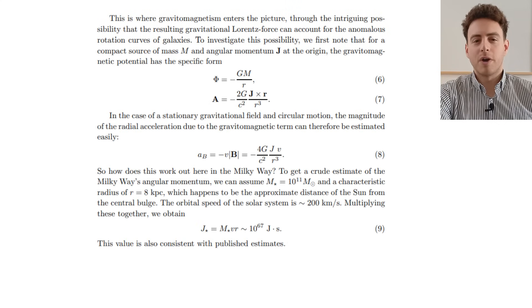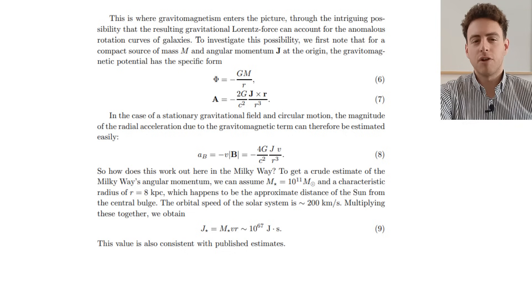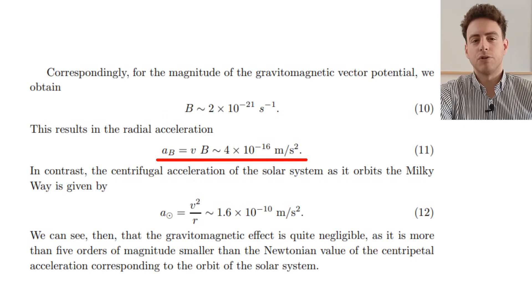Using the Milky Way's visible mass with no dark matter, we can roughly estimate its angular momentum at a typical distance from the core, and we get a radial acceleration contribution from the gravitomagnetic vector potential.